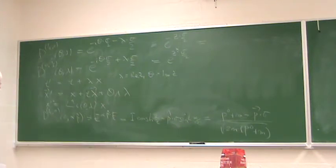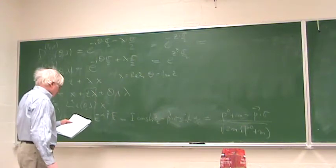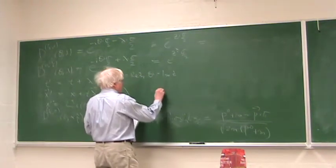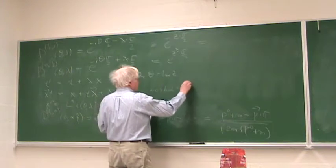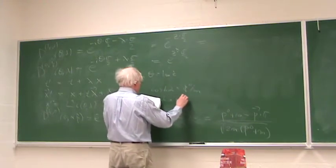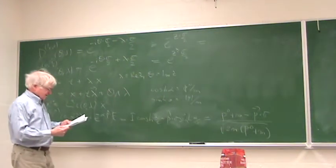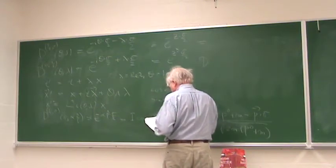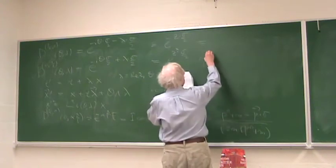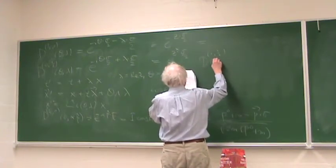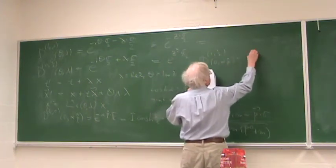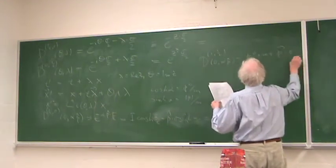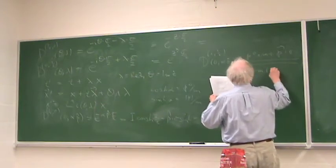That's the two-by-two boost matrix that takes a particle at rest and boosts it into the p-hat direction, so that the relationship between alpha and p0 is that cosh(alpha) is p0 over m, and sinh(alpha) is the length of p over m. That's for the left-handed case. For the right-handed case it's very similar — if you flip this sign, D(0, 1/2) of zero, alpha p-hat is (p0 + m + p dot sigma) over square root of 2m(p0 + m).